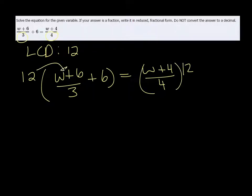So we have to distribute the 12 to both parts. Now when you distribute and you have a fraction, it's often easier to divide first. So 12 divided by 3 is 4, so we get 4 times W plus 6. And then 12 times 6 is 72.